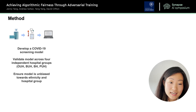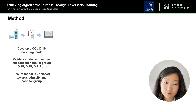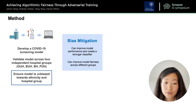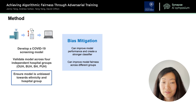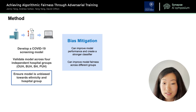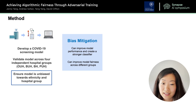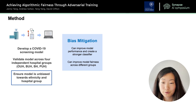So besides developing an effective COVID-19 screening model and validating it across different settings, we also wanted to ensure that our model is unbiased towards ethnicity or hospital group. We focused on something called bias mitigation under the assumption that it can improve model performance, create a stronger classifier, and also improve model fairness across different groups.